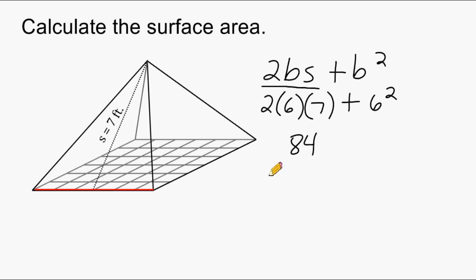So if you're ever asked to find just the area of the four triangular surfaces of a square pyramid, you can just do this part of the formula, or 2 times b times s. This is also known as the lateral area of the figure.